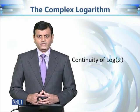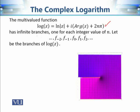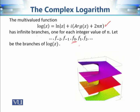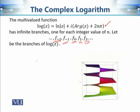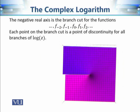Let's start with the continuity of the principal log. This log is a multi-valued function, and for each n we get a different output. We can divide the outputs according to the values of n: for n = 0 we have f₀, for n = 1 we have f₁, and so on. Each of these outputs are separated by the negative real axis, which is the branch cut of these branches. So f₀, f₁, f₂, f₋₁, f₋₂ are the infinite branches of this multi-valued function, each separated by the branch cut.